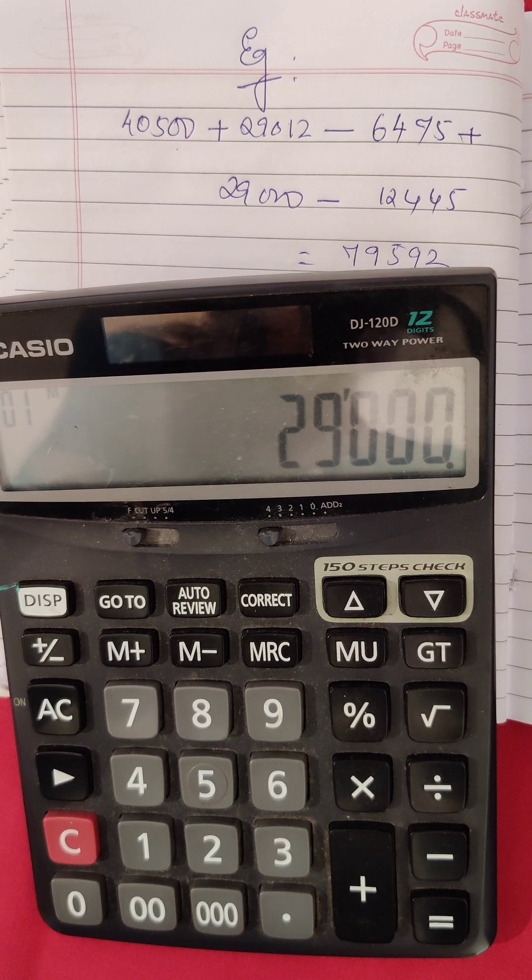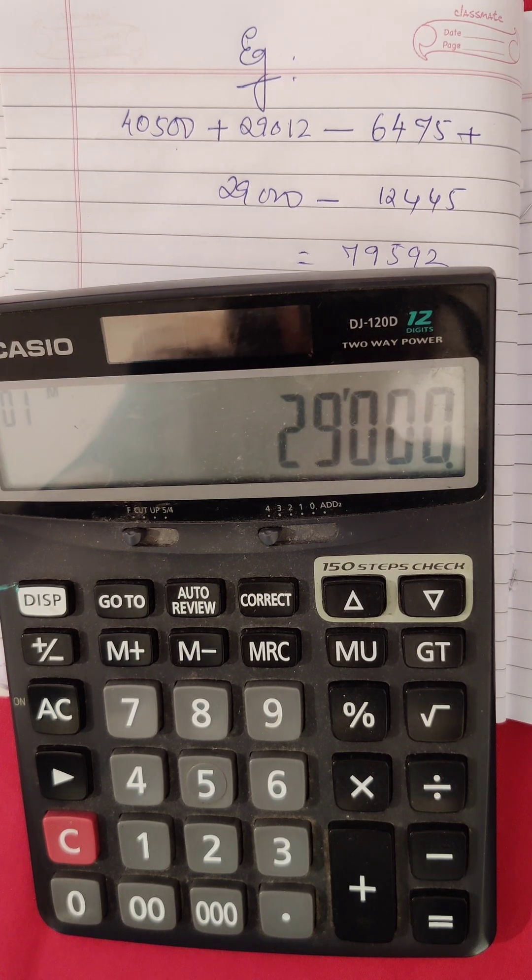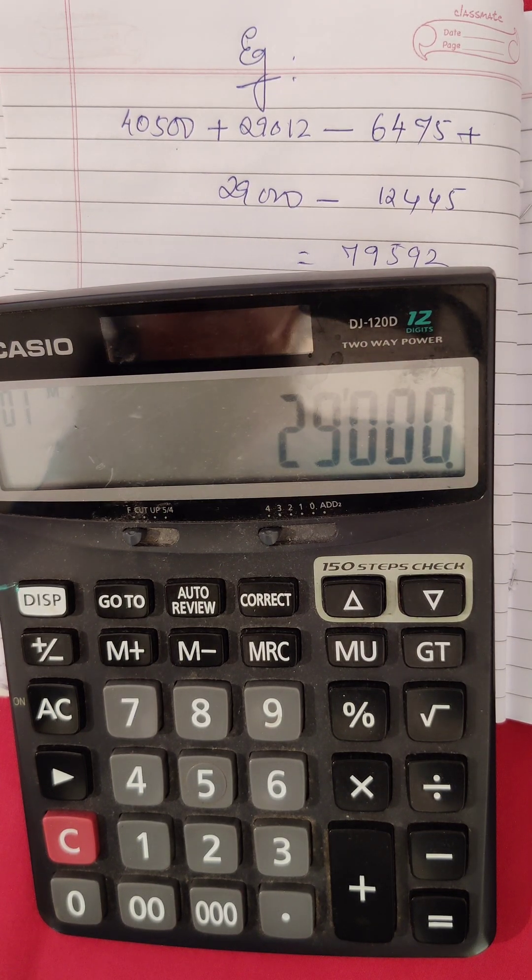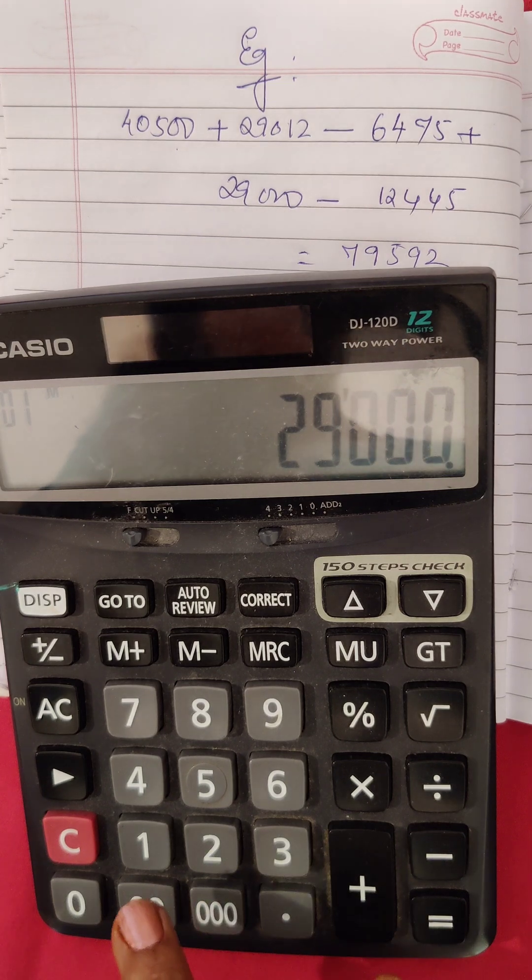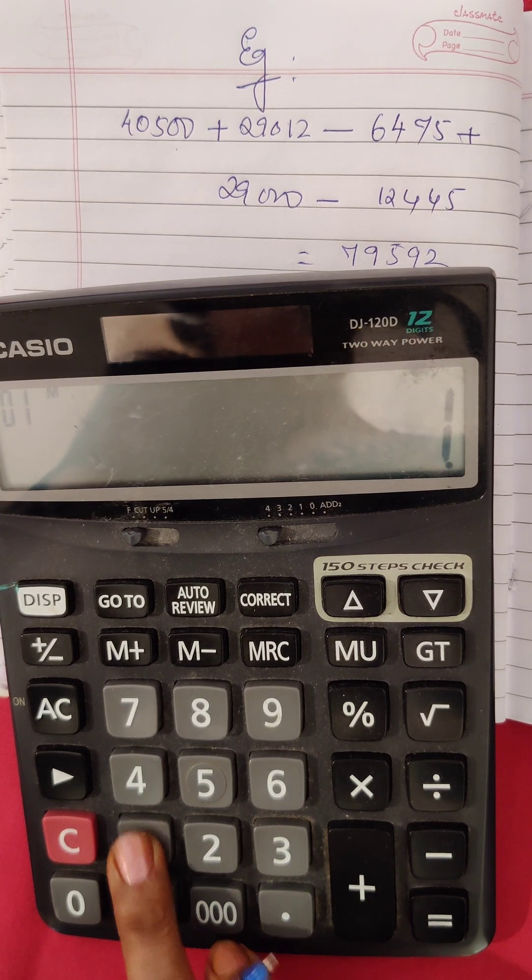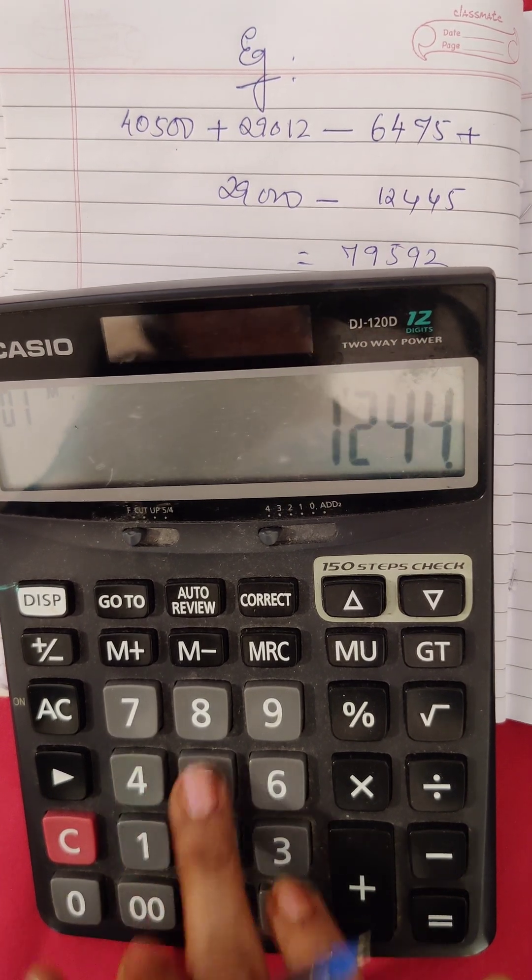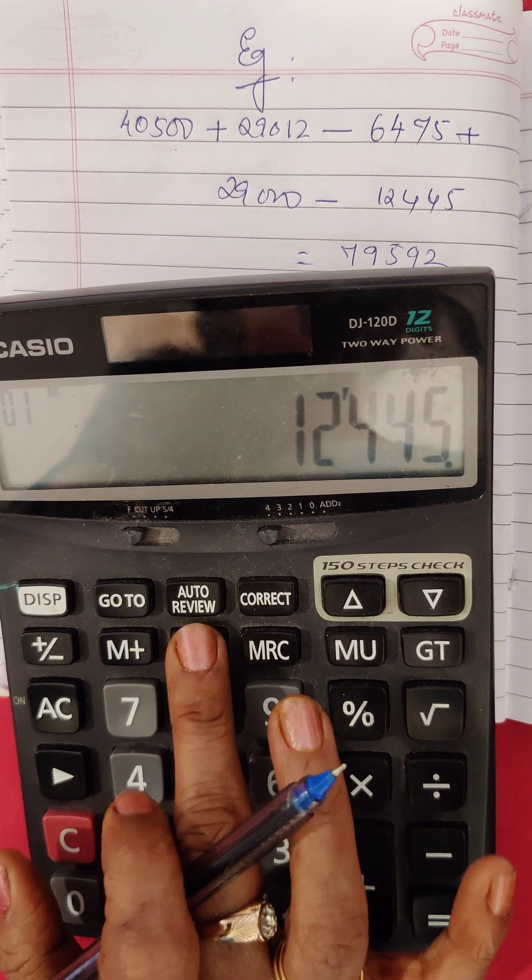Please remember, do not use any equal sign or anything while you are calculating this. Then comes 12,445 that has to be subtracted. So you will do 12,445 and put it in memory minus.